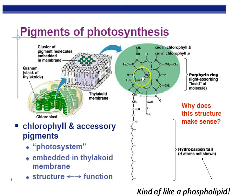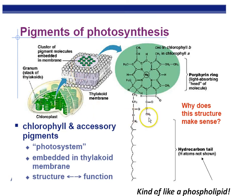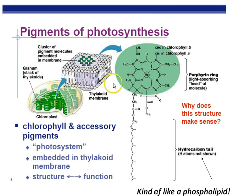If plants are deficient in magnesium, they start to turn different colors. The head of the chlorophyll molecule is polar and the tails are non-polar, so they sit nicely in the thylakoid membranes because they act like a phospholipid. The chlorophyll captures light energy — that's important. The head is called the porphyrin ring, which just refers to the chlorophyll structure.